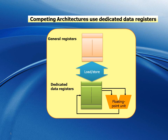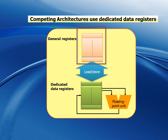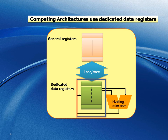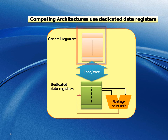Competing architectures need to go through the extra step of loading operand values into the general registers first, then move them to the floating point's dedicated registers. The result of the floating point unit is then placed into the dedicated registers and moved into the general registers, to be then stored into memory.